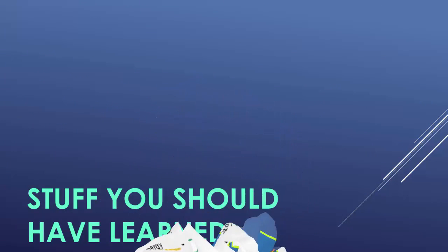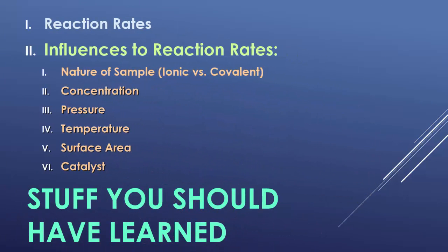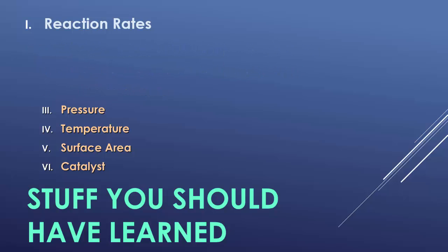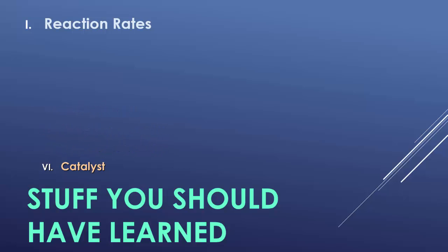So the things you should have learned today: we talked about reaction rates, the different influences on those reactions, ionic versus covalent substances, the effects of concentration, pressure, temperature, surface area, and using catalysts. I hope you guys enjoy this video and have a great night.